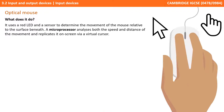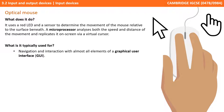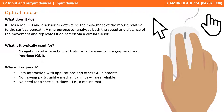Next up is the optical mouse. This uses a red LED and a sensor to determine the movement of the mouse relative to the surface beneath. A microprocessor analyzes both the speed and distance of the movement and replicates this on screen via a virtual cursor. They're used for navigation and interaction with almost all elements of a graphical user interface, have no moving parts unlike older mechanical mice so are more reliable, and there's no need for a special surface such as a mouse mat.